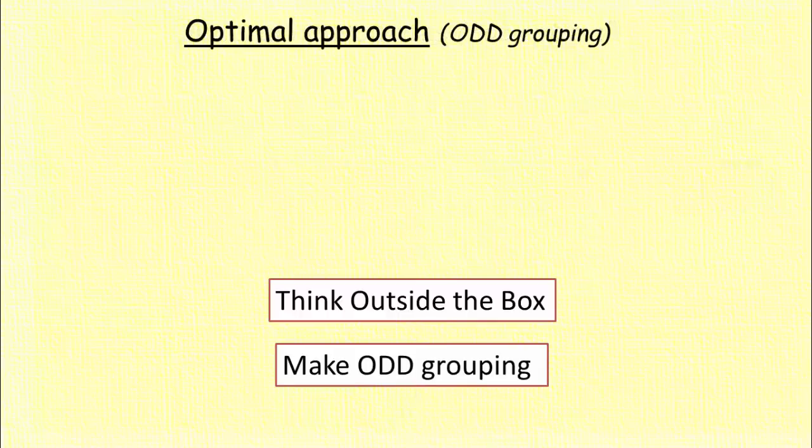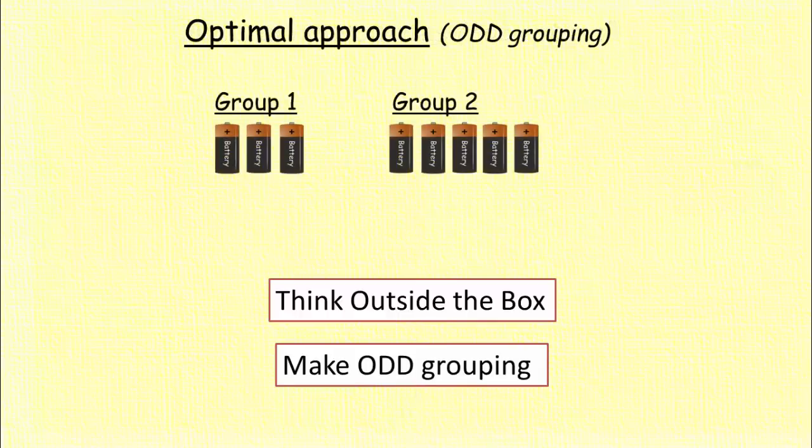You may have the first group of three batteries and the second group of five batteries. But again in the second group you will have ten different combinations which is definitely not a good solution. So you have to break this group further into two groups. Now you have these three groups.